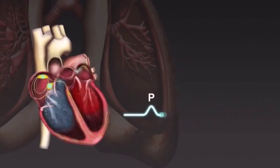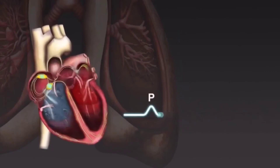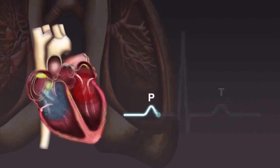Note: this animation shows the ECG recorded from a lead placed at position V6, one of the standard electrode positions to the left of the heart.